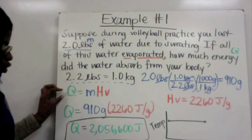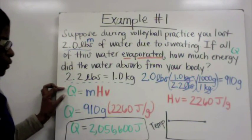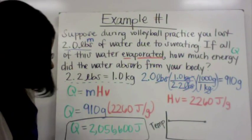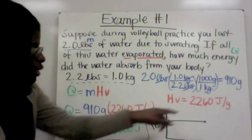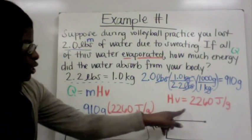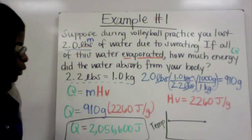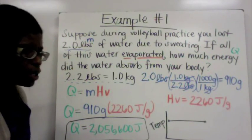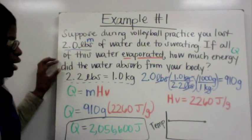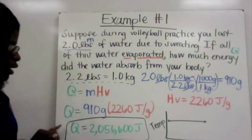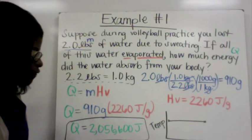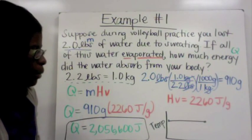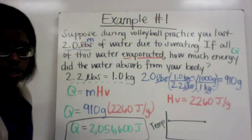The equation to use is Q = mHv, since this is heat of vaporization at 2,260 J/g. Q = 910 grams × 2,260 J/g = 2,056,600 joules. So the amount of energy absorbed from your body is 2,056,600 joules. On a graph, this would remain consistent throughout because there is no temperature change noted in the problem.